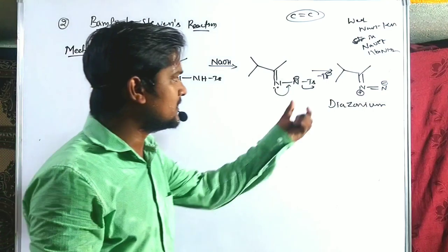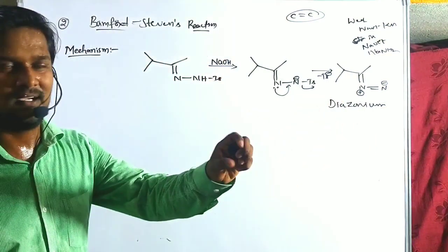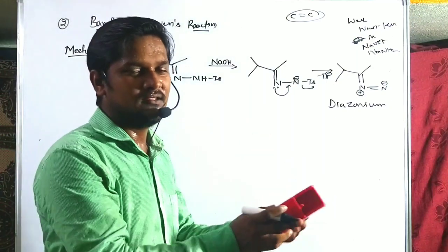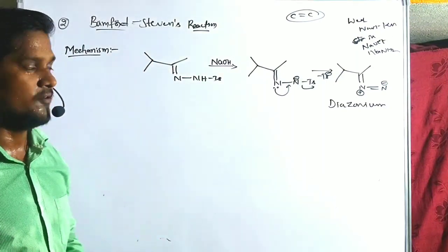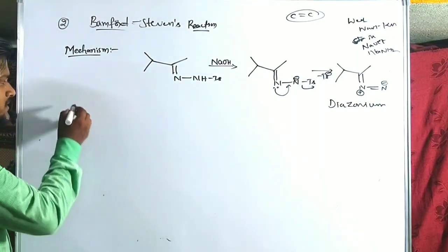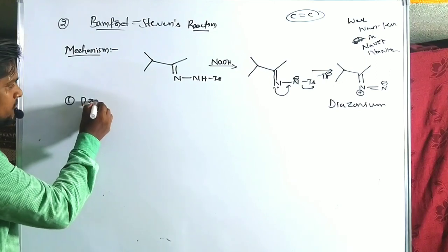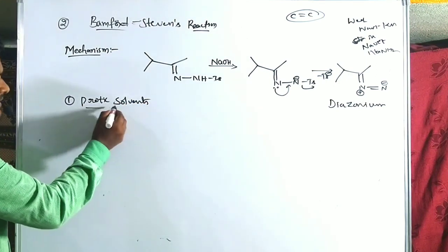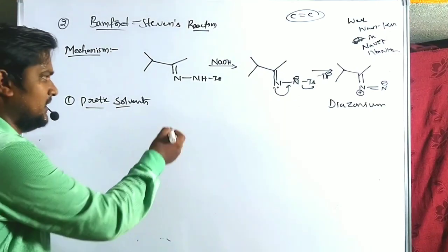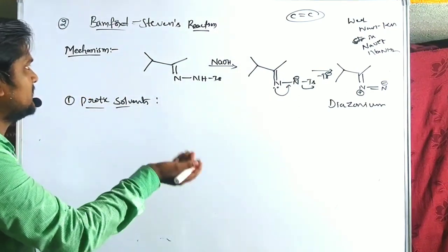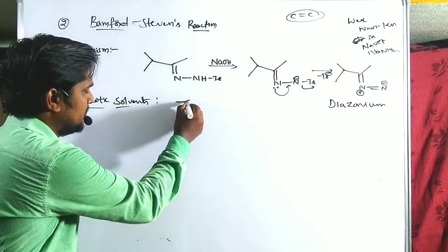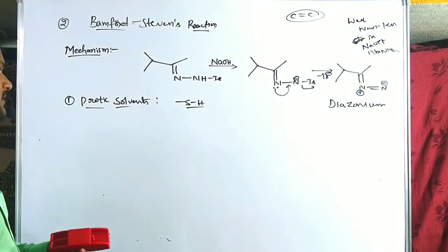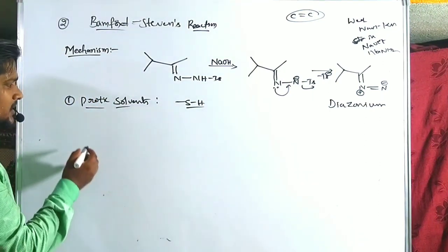The diazonium compound can yield the alkene product in two ways: one in the presence of protic solvents, and another in the presence of aprotic solvents. In protic solvents, H⁺ ions are available. The best protic solvents used in the Bamford-Stevens reaction are thiols.